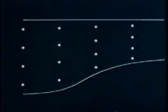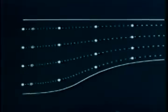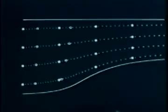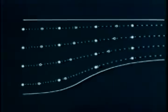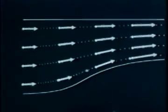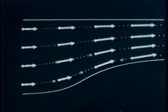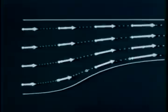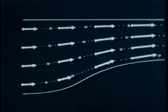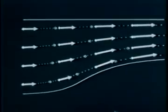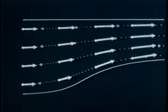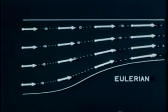Here is a grid of points fixed in space. We show the velocity at each point. A description like this, which gives the spatial velocity distribution seen by a probe in laboratory coordinates, is called an Eulerian description of the flow.